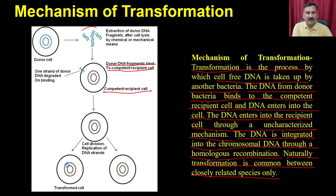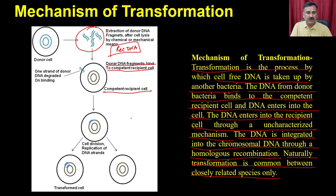In the lab, you add excess chromosomal DNA or recombinant DNA to competent recipient cells. The DNA interacts with the competent recipient cells and is taken up. Once taken up by the cell, it goes through cell division, producing transformed cells. The DNA may have integration sites and integrate into the genome, or it will remain as extrachromosomal DNA in the form of plasmids.